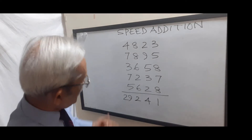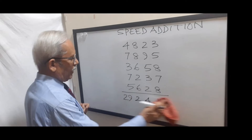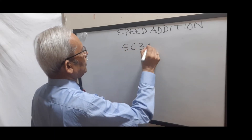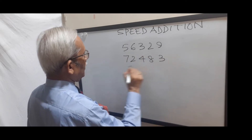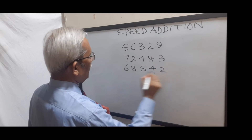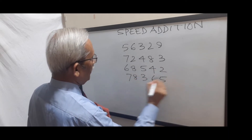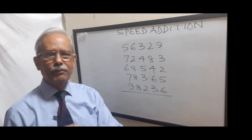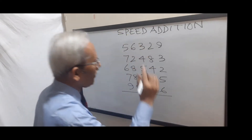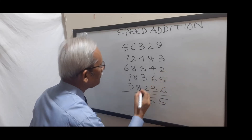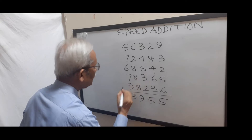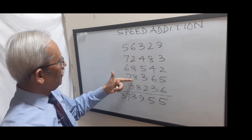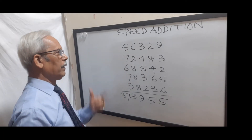Now I'll increase it to a 5 by 5 and see how it goes: 56329, 72483, 68542, 78365, 98236. This is a 5 by 5 addition. I'll count 1, 2, 3 and start. I've done it. Let me check it. Absolutely okay. So this is a 5 by 5 sum.